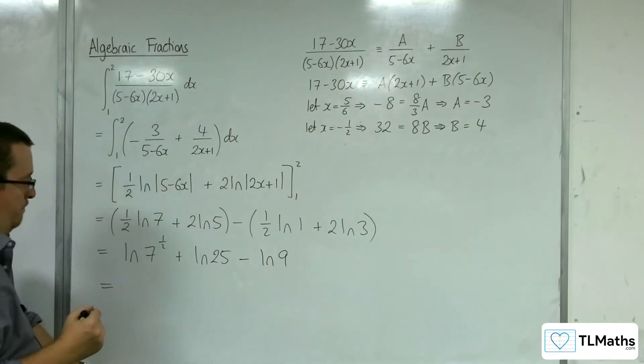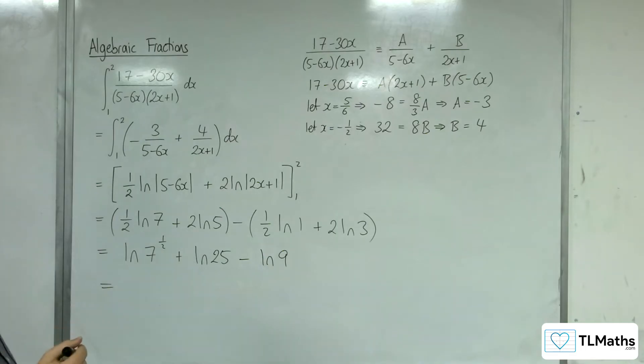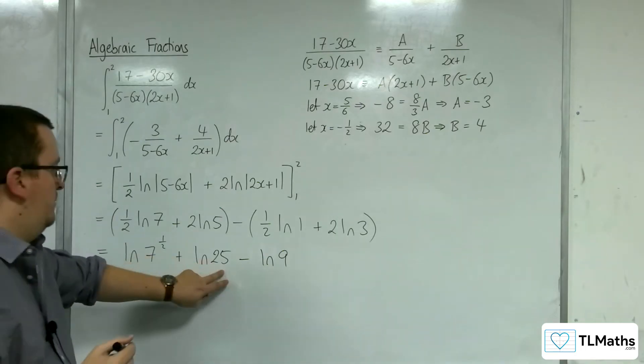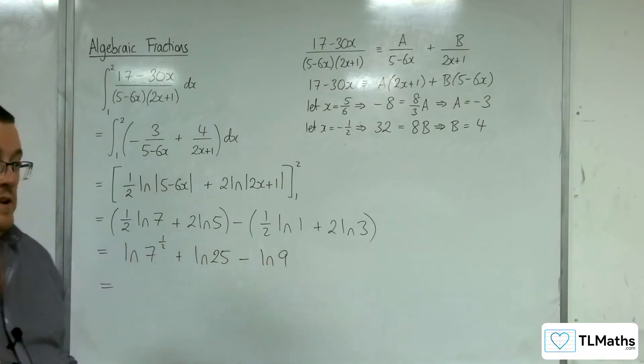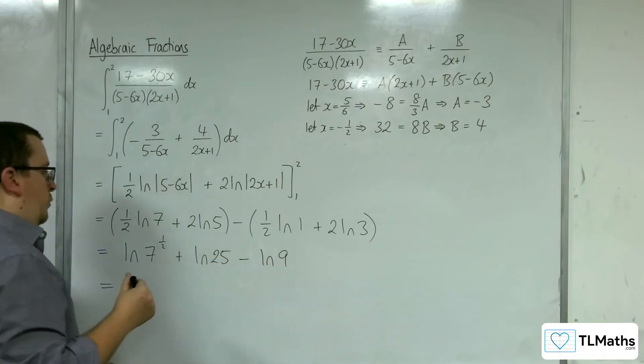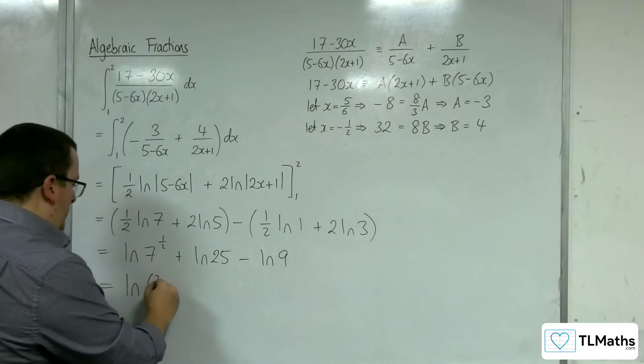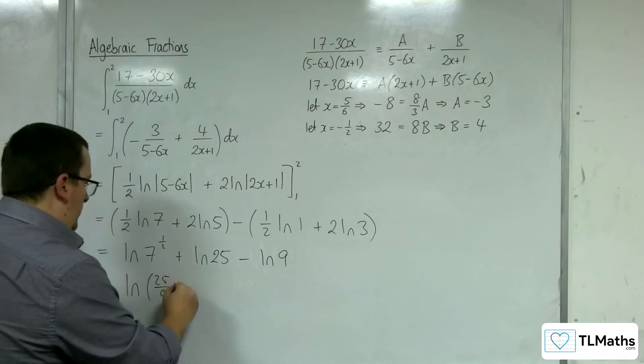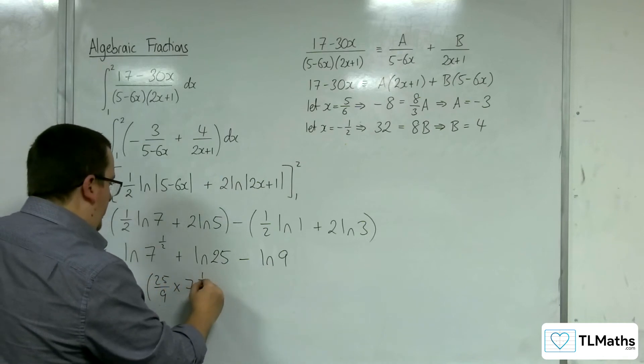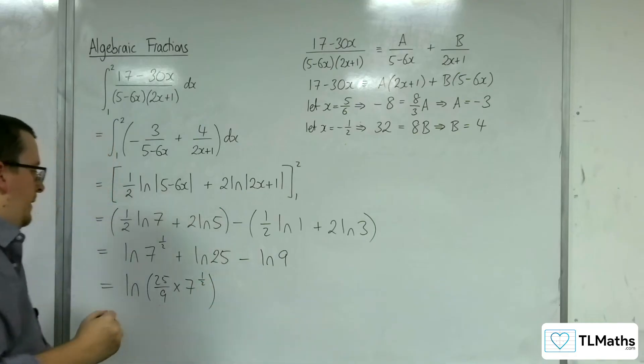Okay. So, now I've got 7 to the half times 25 divided by 9. So, we've got 25 ninths times 7 to the power of a half.